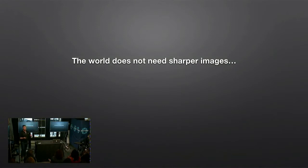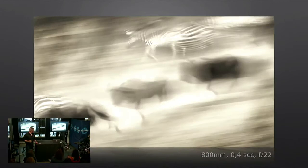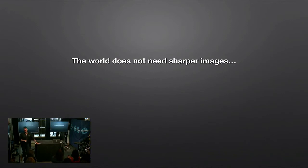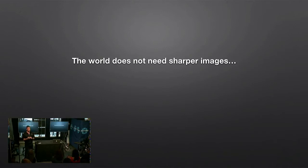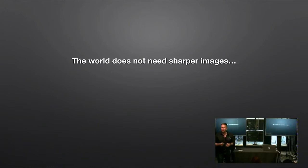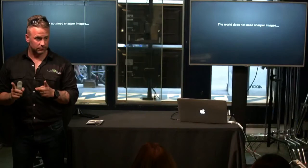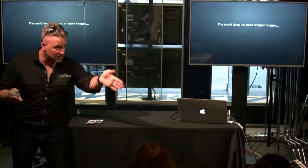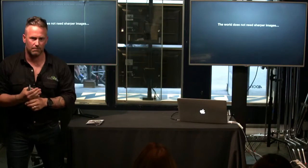Looking at example images — at a previous presentation someone said, 'It's not sharp enough.' It's not supposed to be sharp. We do not need sharper images — there are enough sharp images. A client on a migration trip was shooting a stationary lion at 1/2000th of a second, ISO at two million, saying it's still not sharp enough. Sharpness is like being pregnant — it either is or it isn't. You can't be half sharp. Once an image is sharp, tripling the shutter speed won't change anything.